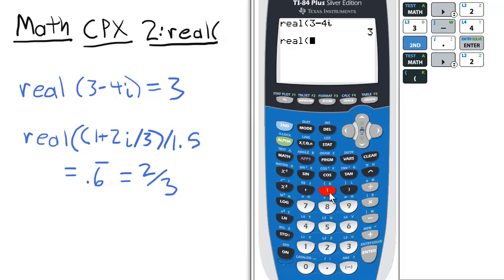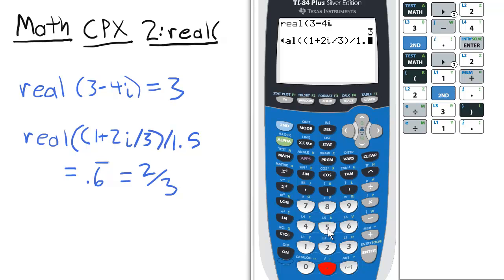open another set of parentheses, 1 plus 2i divided by 3, close parentheses, divided by 1.5.